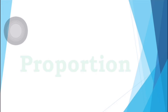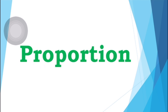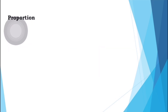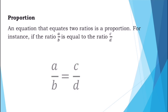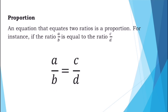Our lesson for today is all about proportion. In this lesson, you will use the knowledge you have learned in the previous grade about ratio. Now we are going to study proportion and its properties. When we say proportion, it is an equation that equates two ratios. For instance, if the ratio a over b is equal to the ratio c over d, then the proportion can be written as a over b is equal to c over d.